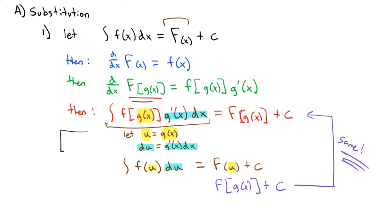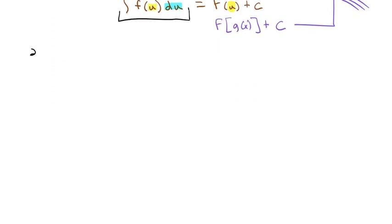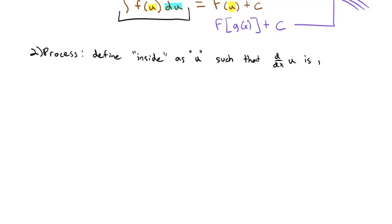This middle step — where I let u and du equal the pieces of the function — is what we call the substitution step. If we can simplify a function by identifying the inside function, the entire integral becomes much simpler. To summarize: define the inside as u such that the derivative of u is part of the function.